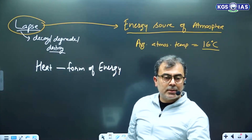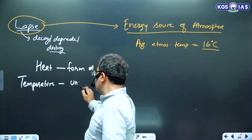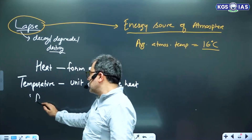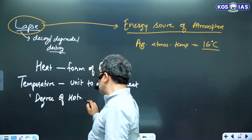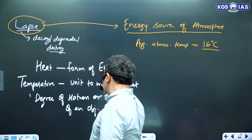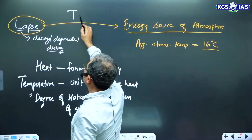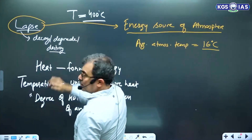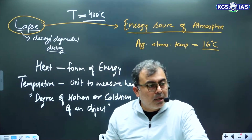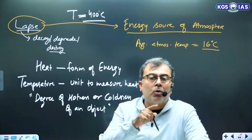How do we measure heat? Temperature. Temperature is the unit to measure heat. Science students remember this famous statement: temperature is the degree of hotness or coldness of an object. So if somewhere it is written that temperature is 400 degrees Celsius, you should not touch it to test it. It is the measure of hotness. You already know what 100 degrees Celsius means.